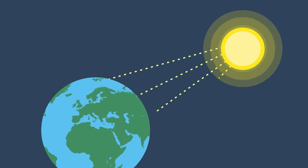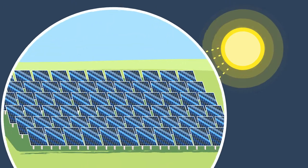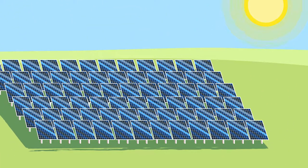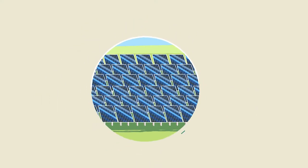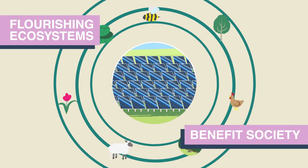Worldwide, the power of the sun is being harnessed through large-scale, ground-mounted solar parks. Usually, solar parks are built on low-grade agricultural land. These solar parks have the potential to become flourishing ecosystems that benefit society.